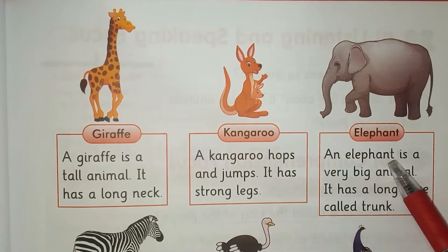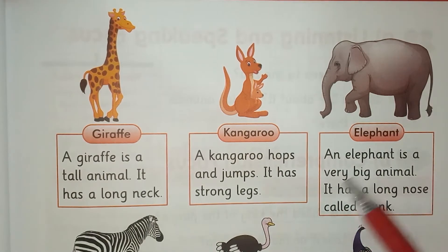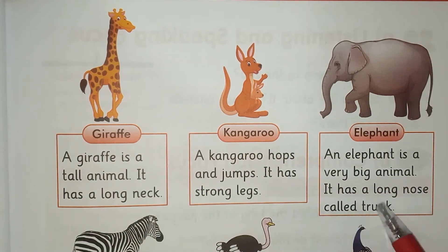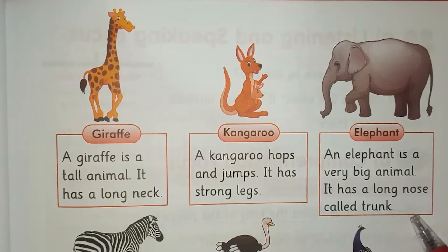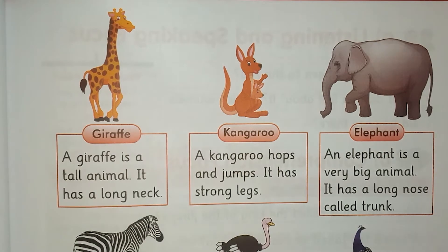Elephant. An elephant is a very big animal. It has a long nose called a trunk. Haati ek bohat bada janwar hai. Iske lambi naak hoti hai jise sond kehte hain.